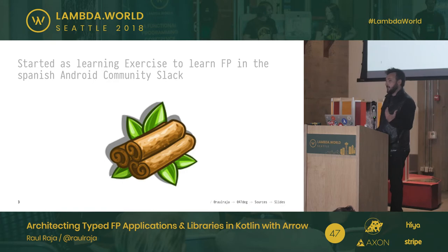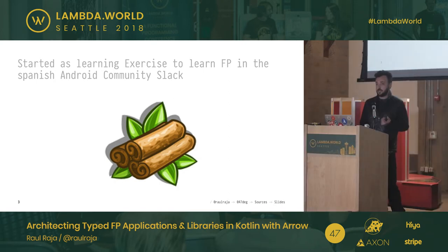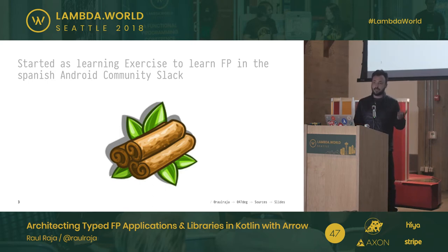Arrow, as a library, started as a simple exercise where a bunch of folks from the Spanish Android community wanted to learn about functional programming and how they could apply functional programming techniques to Android development. At that time, Google had not announced yet that Kotlin was going to be the official language for Android. But almost a year ago they announced Kotlin as the de facto language, and most mobile consultancies doing Java are now migrating to Kotlin.